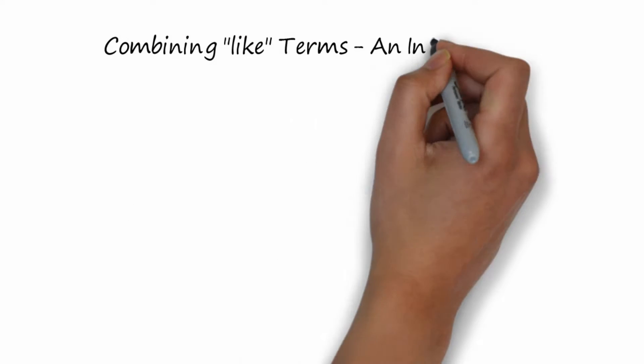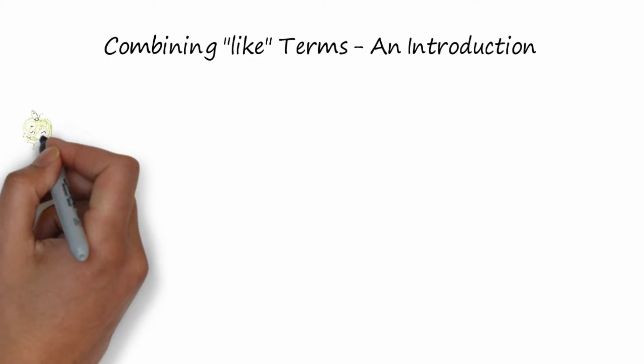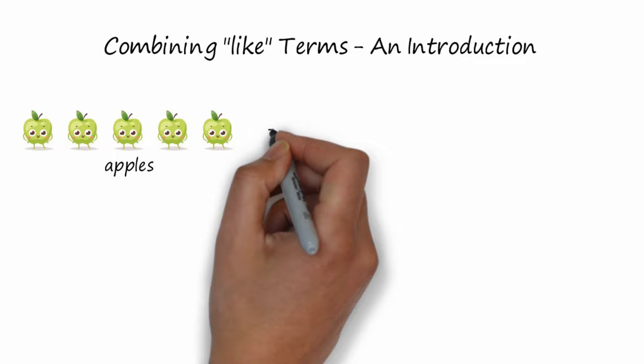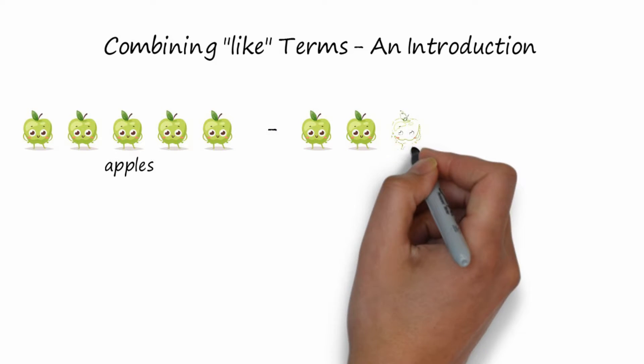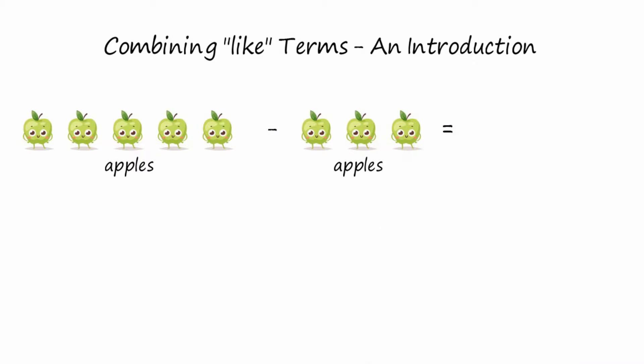Combining like terms. Let's say that we had five apples and we wanted to subtract three apples. What would we have? Well, five apples minus three apples, we'd have two apples left.